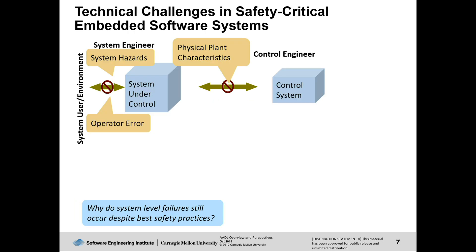From a technical side — the typical picture for system and control engineers is a system under control and a control system. There are various mistakes you can make: operator errors, forgetting system hazards, physical plant characteristics. One example: the London Underground had an automated system for closing doors. In winter, one door didn't close all the way, so the driver stepped outside to close it manually — and the train took off without him, because a special fault situation hadn't been programmed in. As we add software, there are plenty more places where mistakes can be made.